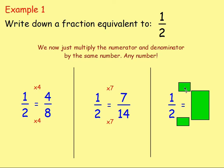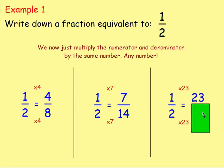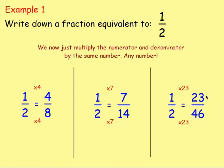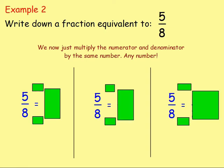Let's go with another one. Pick a number to multiply both the numerator and denominator by. Twenty-three. So we're multiplying the top by 23 and the bottom by 23. One times 23 is 23, and two times 23 is 46. So you end up with 23 over 46, and again that's the exact same as one half.